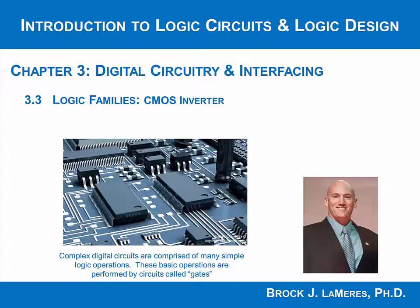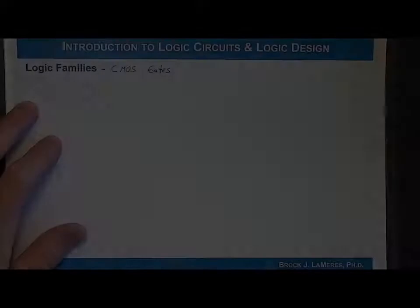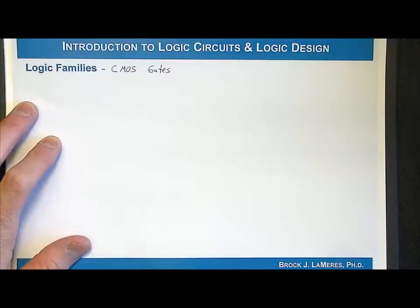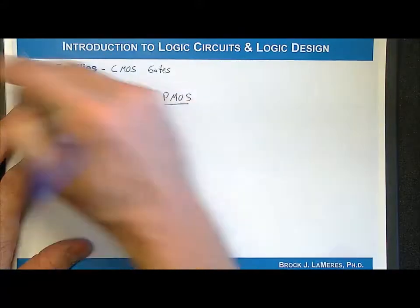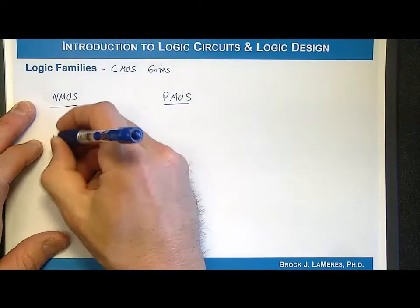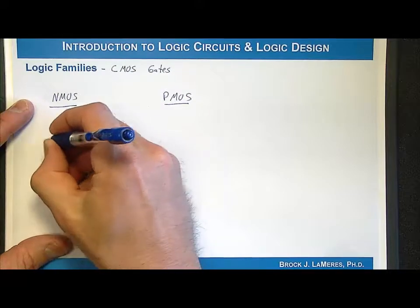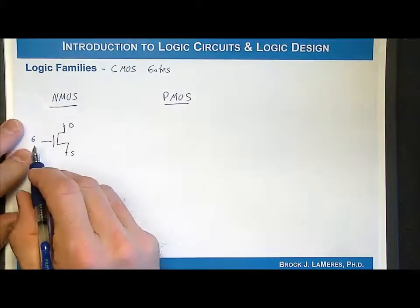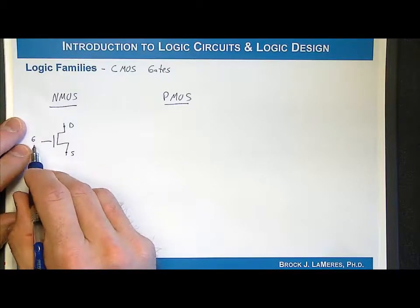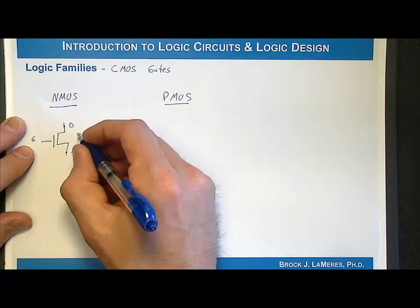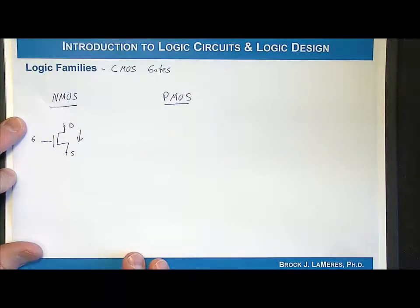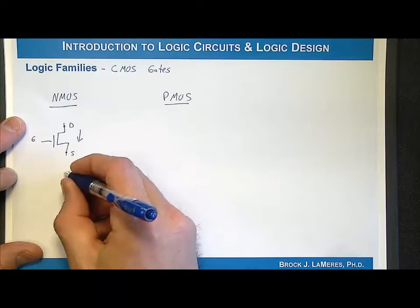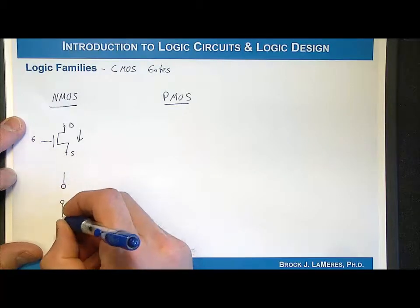Now let's take a look at CMOS logic gates. We have looked at how you create transistors used within the CMOS logic approach. We had an NMOS and a PMOS. Very briefly, the NMOS has a drain, a source, and a gate. If you apply positive voltage on the gate relative to the source, the drain and source will allow current to flow. This is very similar to a switch, and that's how we use the NMOS transistor when we build CMOS logic gates.